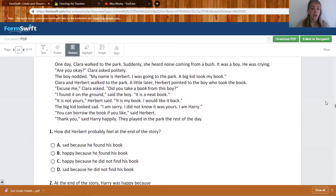One day, Clara walked to the park. Suddenly, she heard noise coming from a bush. It was a boy. He was crying. Are you okay? Clara asked politely. The boy nodded. My name is Herbert. I was going to the park. A big kid took my book. Clara and Herbert walked to the park a little later. Herbert pointed to the boy who took the book. Excuse me, Clara asked. Did you take a book from this boy? I found it on the ground, said the boy. It's a neat book. It is not yours, Herbert said. It's my book. I would like it back. The big kid looked sad. I am sorry. I did not know it was yours. I am Harry. You can borrow the book if you'd like, said Herbert. Thank you, said Harry happily. They played in the park the rest of the day.